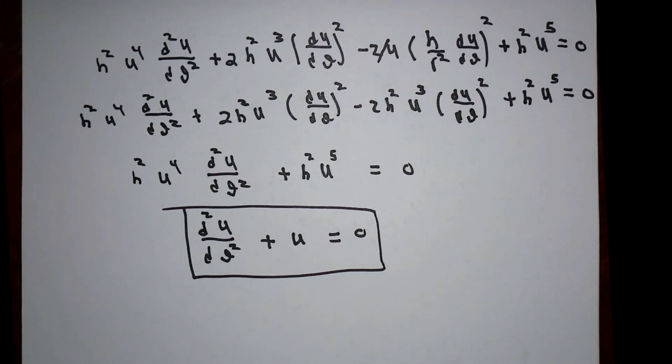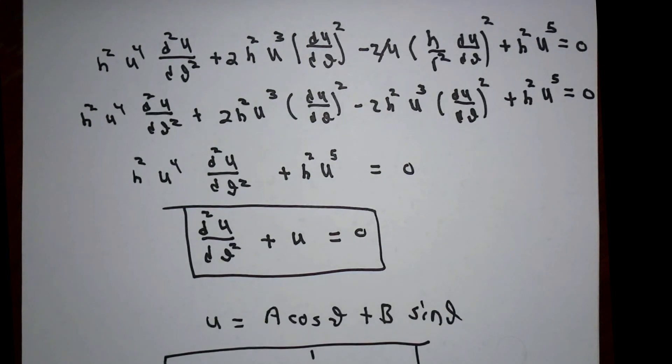And now another miracle happens. This is one of the few differential equations that you can write down a closed form solution for. So r, as a function of theta, is one over u, one over a cosine theta plus b sine theta. After all of this, I'm going to express this back in terms of Cartesian coordinates to make sure that we get what we think we should get.